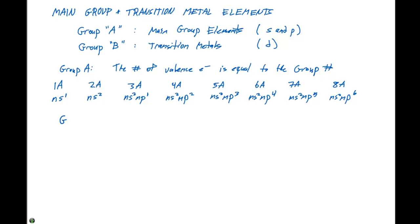If we look at group B, which is the transition metals, we see a little bit of different properties and these elements will behave a little bit differently than the main group. First of all, they're all metals.